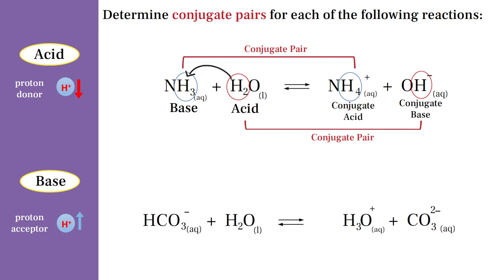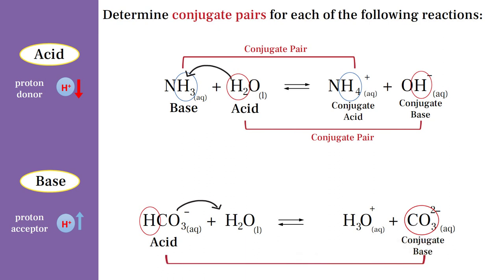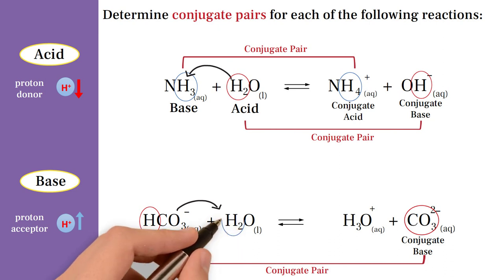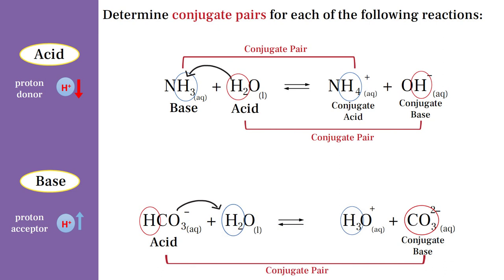Another example. First, it is necessary to examine the equation to determine the acid and base. As we can see, the HCO3⁻ ion is the acid in the forward reaction because it is a proton donor. So, the CO3²⁻ ion will be its conjugate base, and together they form a conjugate pair of acid and base. While water is the base in the forward reaction because it is a proton acceptor, and in turn, the hydronium ion is the conjugate acid — so they will together be a conjugate pair of acid and base.